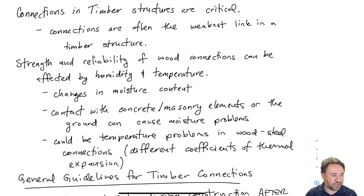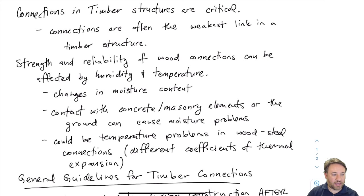Some factors that affect timber generally also apply to connections. Moisture content affects strength and stiffness, and we can run into problems at connections depending on how we lay them out. We looked at what could happen if we put timber directly in contact with concrete or masonry — moisture problems that could lead to rot. One thing we didn't discuss before is temperature problems in wood-steel connections.